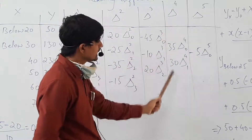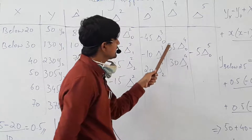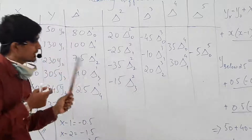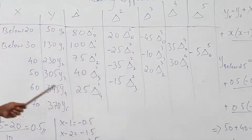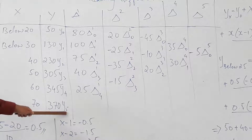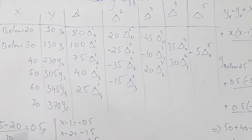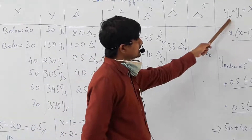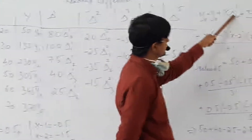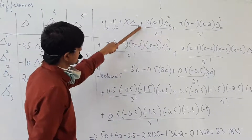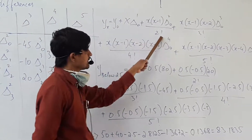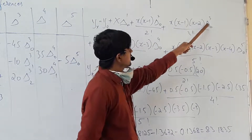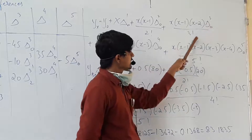So these are the five leading differences table. I have written till y5 — five leading differences per table. The formula we use: y_x equals y0 plus x·Δ1 plus x(x−1)/2!·Δ2 plus x(x−1)(x−2)/3!·Δ3 plus x(x−1)(x−2)(x−3)/4!·Δ4.